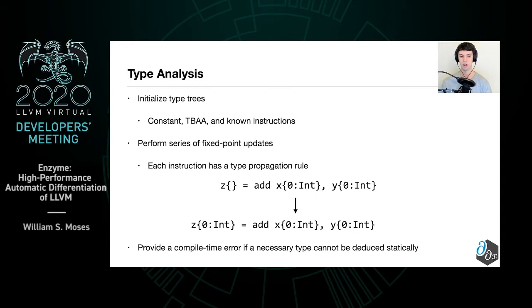If there's any particular type that we need to determine for correctness, we will provide a compile-time error if it cannot be deduced statically, thereby allowing the user to provide that information rather than transparently creating incorrect code.